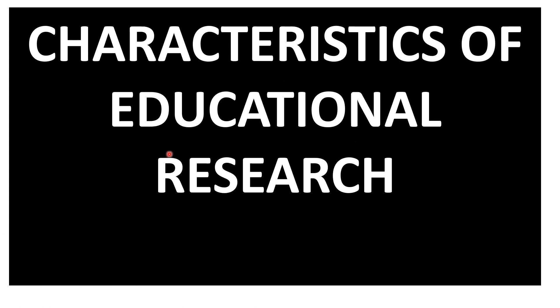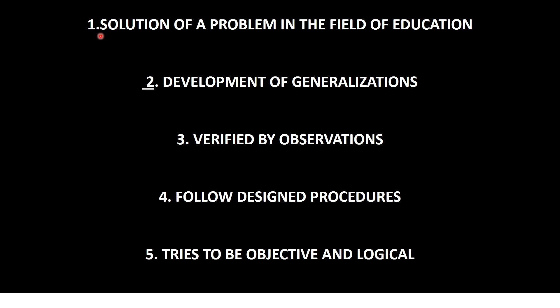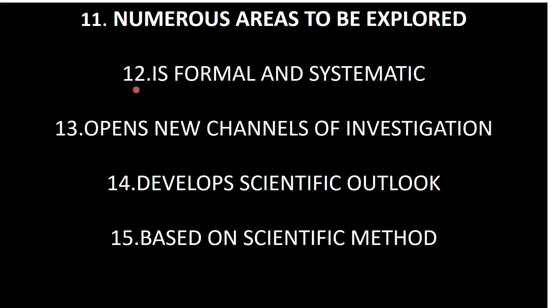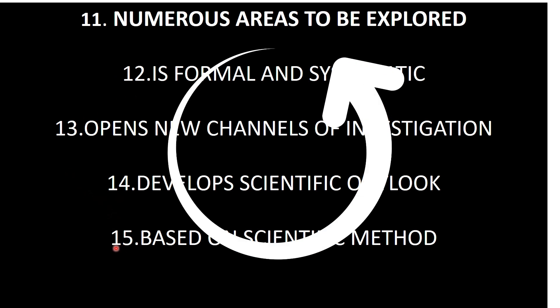Now let's see characteristics of educational research from a different point of view by listing them out. First, it usually finds a problem in the field of education, and tries to rectify it. It tries to improve the quality of education and finds out generalizations, which are usually verified by observations. It follows designed procedures and always tries to be objective and logical. As seen in the display, there are additional features: it involves insight and imagination, it's an interdisciplinary approach, it usually does not control events, and educational research needs new ideas to be explored.